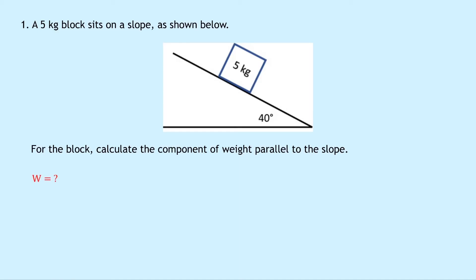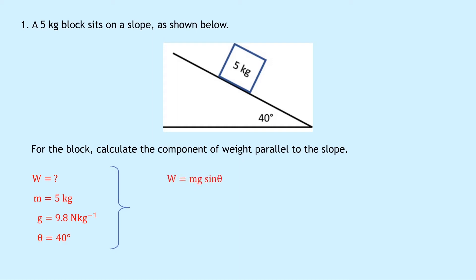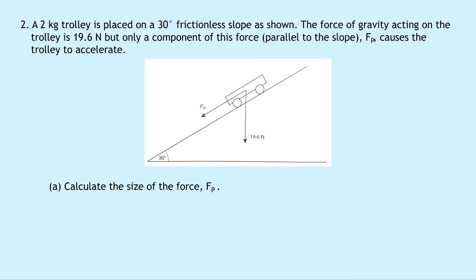Writing down what we know: we're trying to find the component of weight parallel to the slope, which we'll call W. The mass is 5 kg, g is 9.8 N/kg on Earth, and the angle theta is 40 degrees. The equation for the component of weight parallel to the slope has sine in it: W = mg sine theta. Substituting: 5 × 9.8 × sin(40°) = 31.5 newtons.